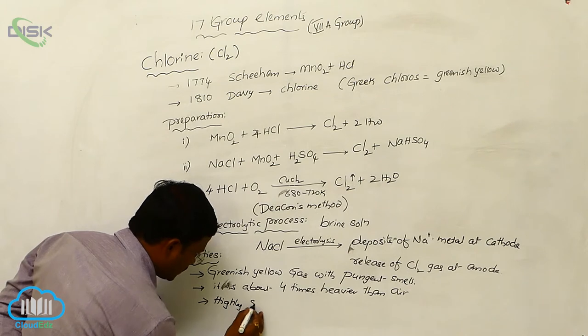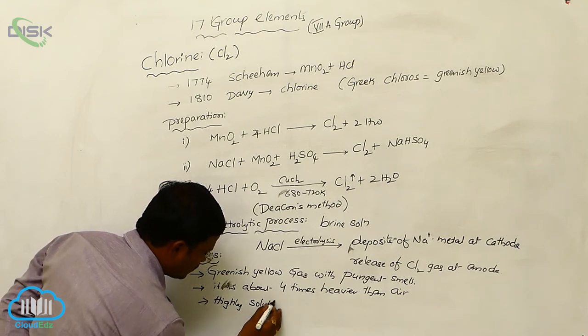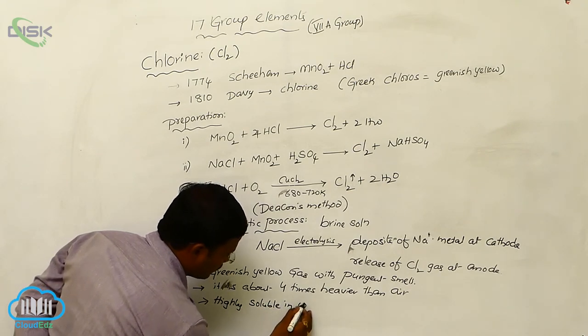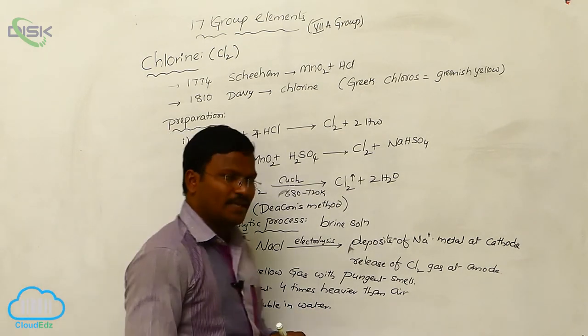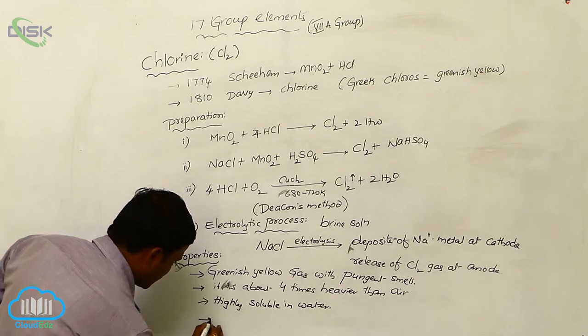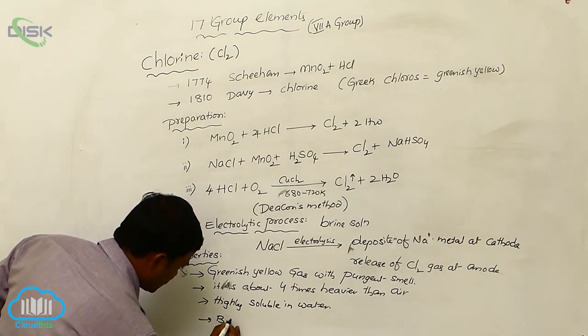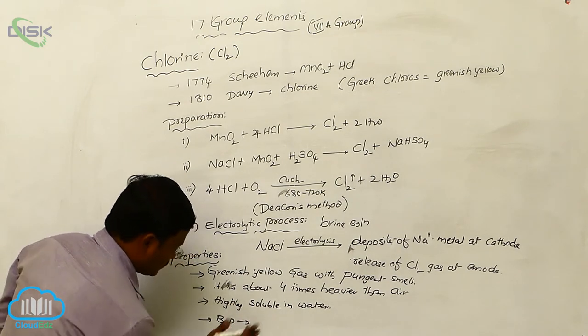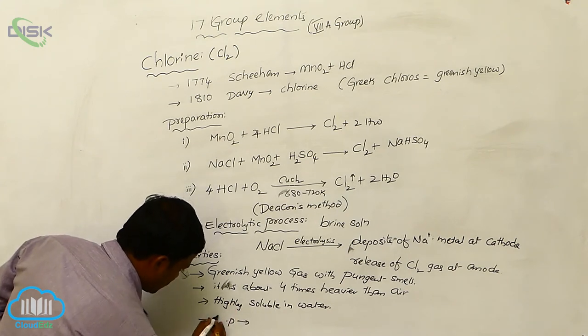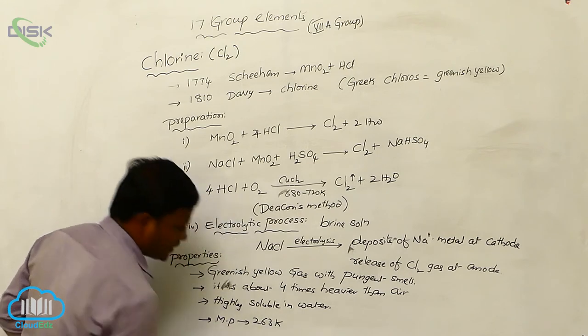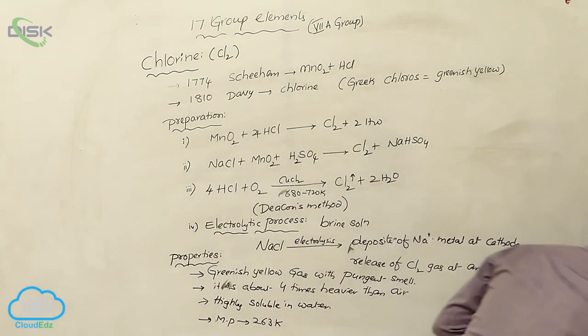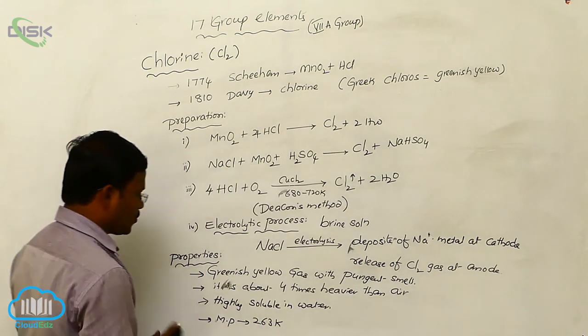It is highly soluble, highly soluble in water. Having the melting point nearly 263 degree Kelvin. The melting point of the chlorine is nearly about 263 degree Kelvin. This is about some physical properties that we can identify with chlorine.